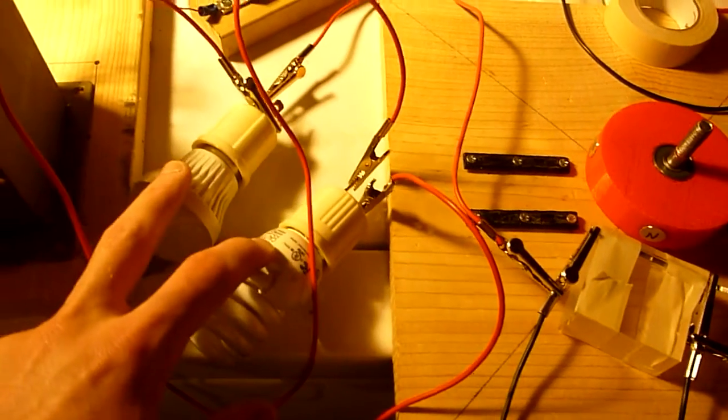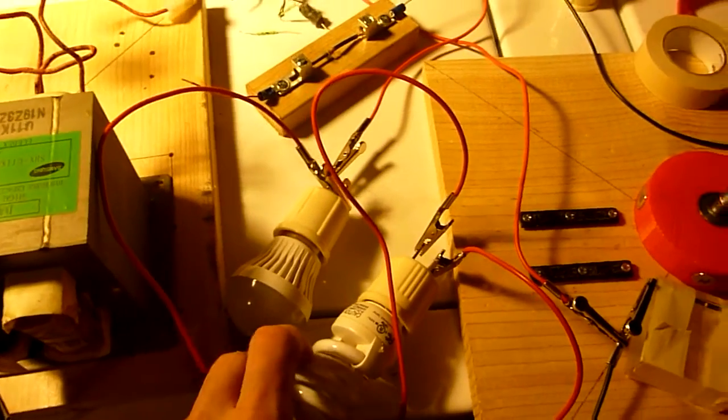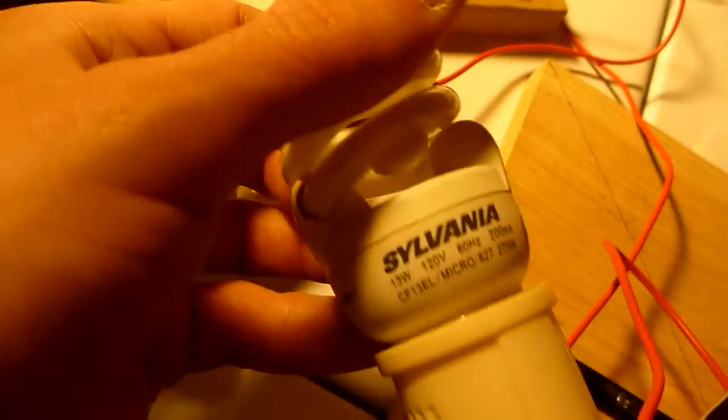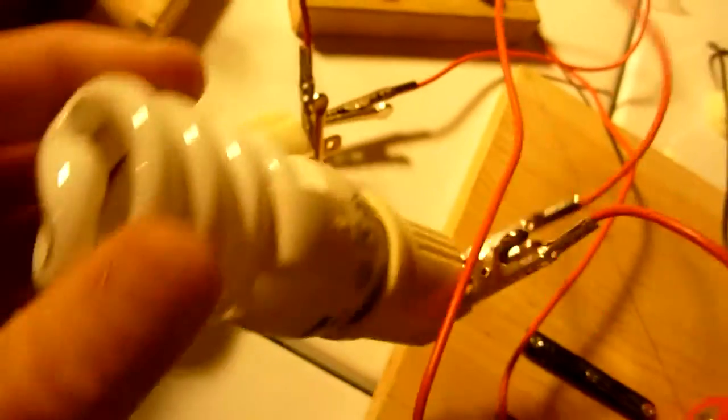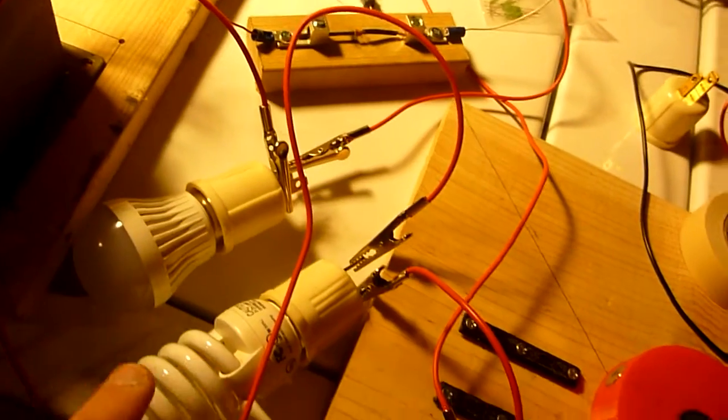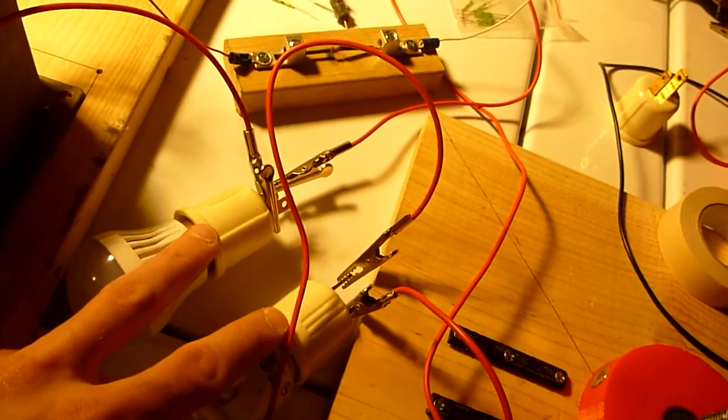And across the reed switch, we connect these two light bulbs. These light bulbs, one of the light bulbs is 13 watts, and this light bulb is 5 watts. And the light bulbs are wired up in series.